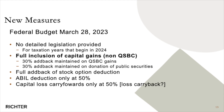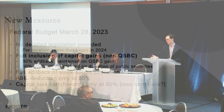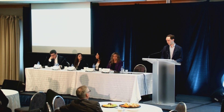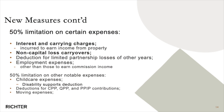Other changes include a full addback of your stock option deduction, so that your stock option benefit is included at 100%, similar to capital gains. There is also a limitation of certain deductions and capital loss carry-forwards and non-capital loss carry-forwards. Carry-forwards and losses realized in a prior year will now only offset AMT at 50% in the current year. There's mention of loss carry-backs but that is not in the federal budget, so we'll see.